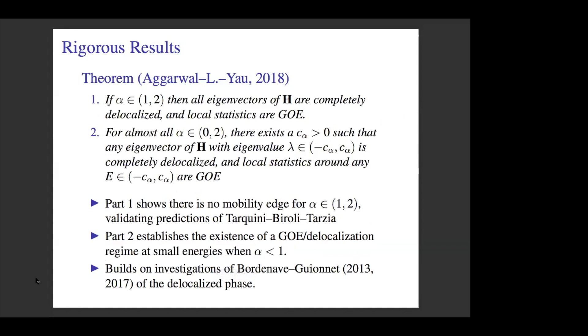In some work with Aggarwal and Yau, we were able to partially confirm these predictions. For alpha between 1 and 2, we actually confirmed the predictions entirely. We showed that there was no mobility edge. In fact, we validated the predictions of Tarquini-Biroli-Tarzia versus the predictions of the previous work of Cizeau-Bouchaud. That essentially resolves the problem for alpha between 1 and 2.